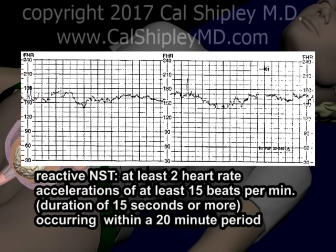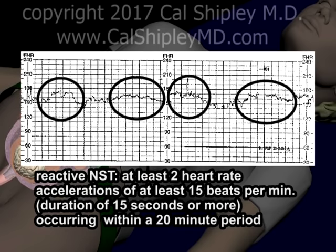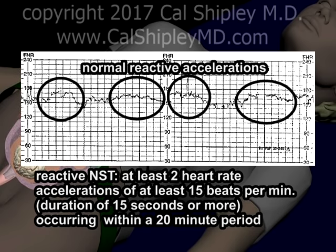The non-stress test is said to be normal — that is, reactive — if at least two heart rate accelerations of at least 15 beats per minute, with a duration of 15 seconds or more, occur within a 20-minute period. In the sample FHR strip shown here, there are four accelerations which fit the definition for the reactive NST, occurring within about a 7-minute period.